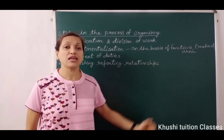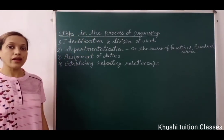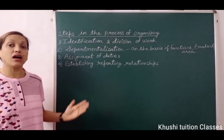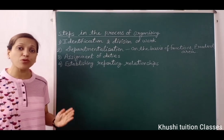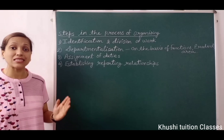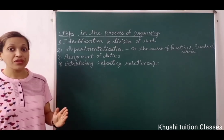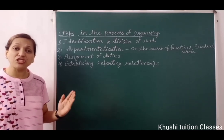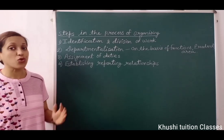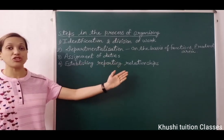यह departments area wise भी हो सकते हैं, जैसे north market, south market, east market या west market. The third step is assignment of duties. Departments बनाने के बाद, हर department में different posts और job positions decide होती हैं. फिर employee को उसकी efficiency, skill, capability के हिसाब से यह post assign की जाती है. Best performance और efficiency increase करने के लिए जरूरी है कि कोई भी post best suited person को ही दी जाए.